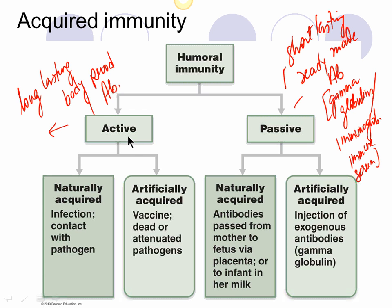Active naturally acquired immunity is when you actually get an infection — you come in contact with a pathogen. For example, you get infected with strep throat, measles, or chicken pox. The virus enters your body, your body begins to produce antibodies, and they remain with you. So you usually don't get infected the next time because those antibodies are still present. This is naturally acquired because it occurs through a natural process.